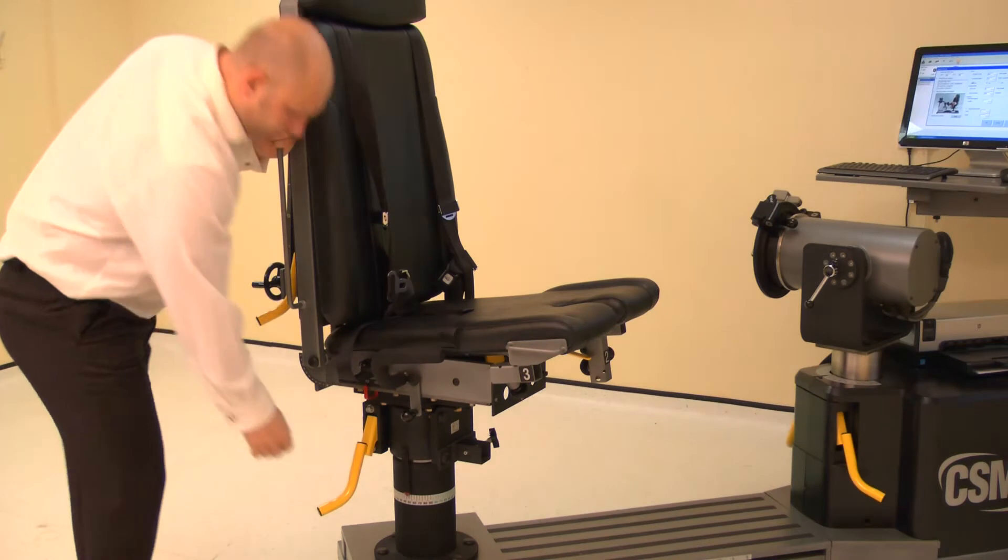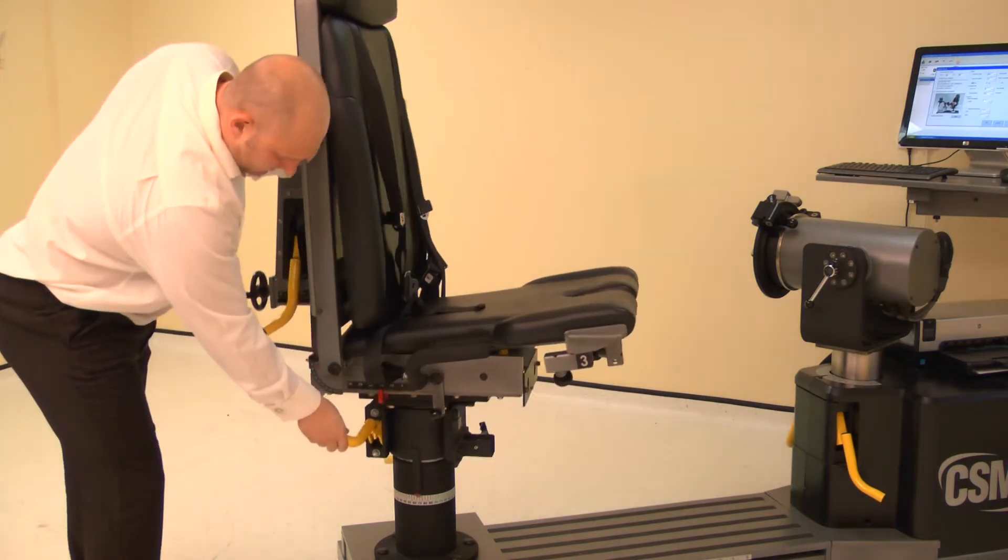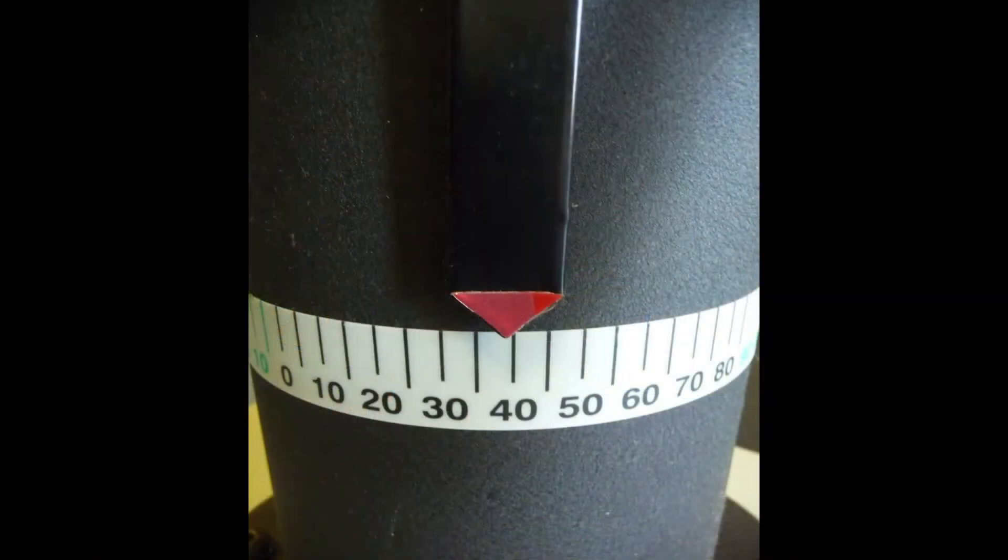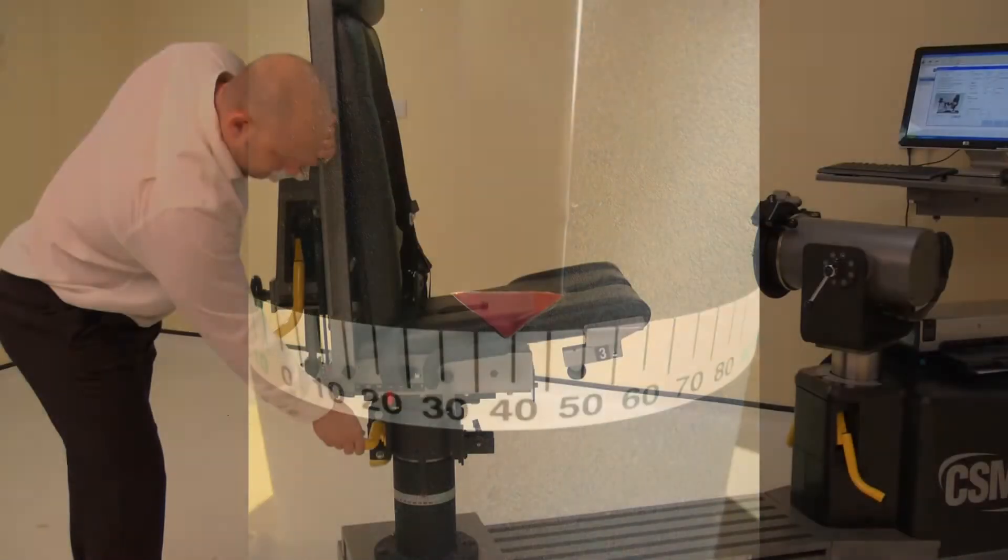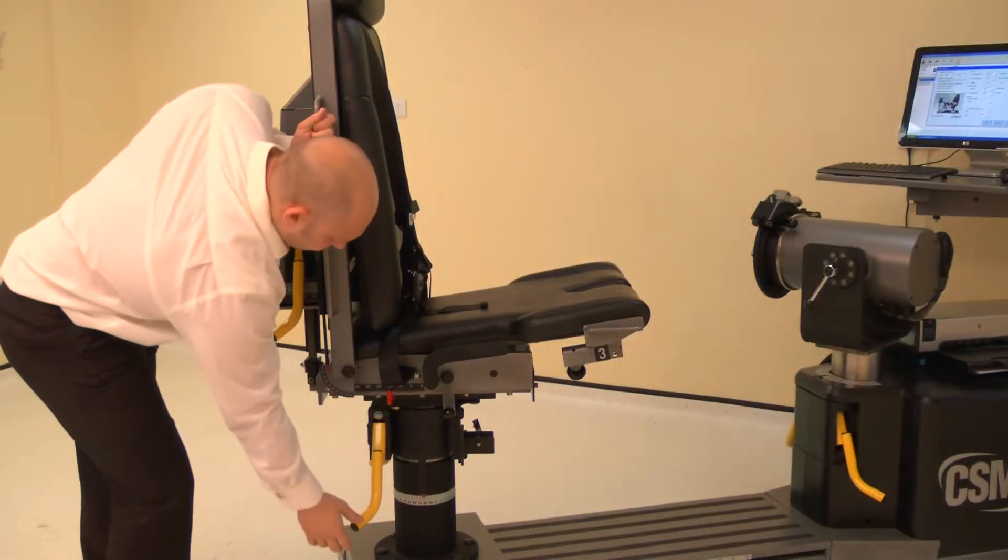Now adjust the chair rotation. Lift the locking handle and rotate the chair. For the left knee rotate the chair to 40 degrees on the black scale. Ensure both locking handles are pushed down to secure.